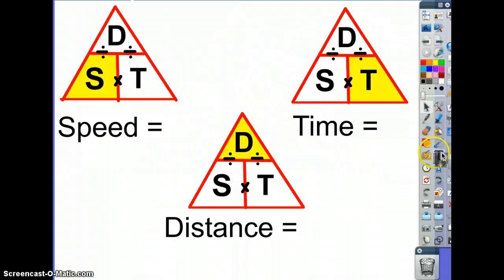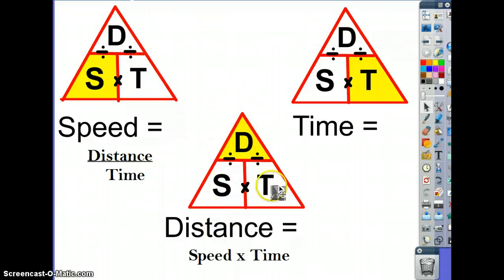For example, to find the speed of an object using the DST triangle, D always goes on top, S always on the left, T always on the right. To find the speed of an object, all you have to do is cover up the S. So speed equals distance over time, or like we said in class, distance divided by time. To find the distance of an object, cover up the D. Distance would be speed times time, because the speed and the time are not on top of each other. The S and the T are next to each other, and so in math that means multiply. If you want to find the time an object's traveled, how long did it take them, cover up the T. What you have left over is D over S. So the formula for time would be distance divided by speed.